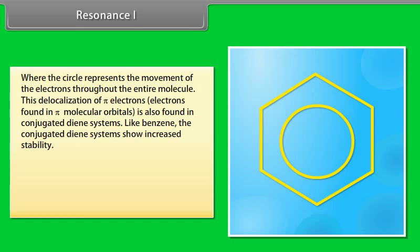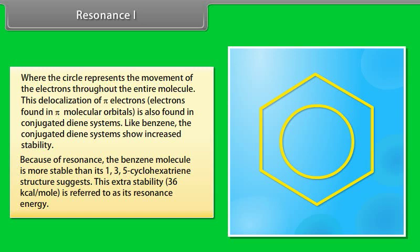The circle in the benzene symbol represents the movement of electrons throughout the entire molecule. This delocalization of pi electrons — electrons found in pi molecular orbitals — is also found in conjugated diene systems. Like benzene, conjugated diene systems show increased stability because of resonance. Because of resonance, the benzene molecule is more stable than its 1,3,5-cyclohexatriene structure suggests. This extra stability — 36 kilocalories per mole — is referred to as its resonance energy.